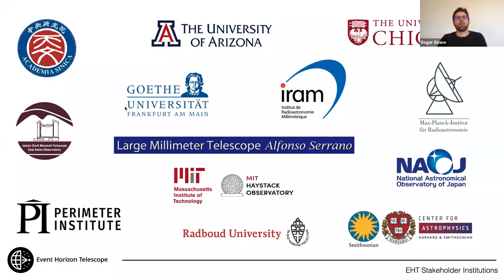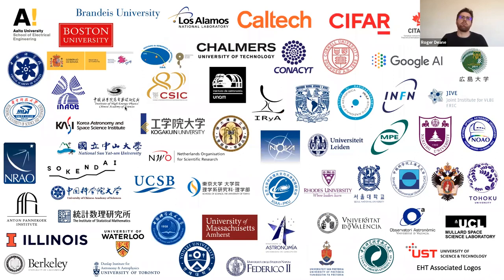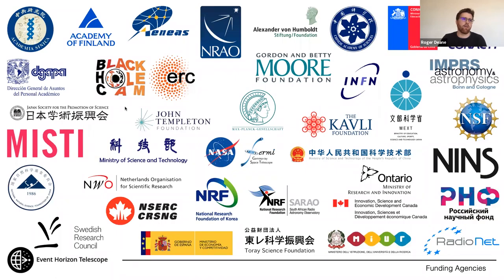The EHT is made up of 13 stakeholder institutes that run the facilities comprising the EHT array. There are affiliated members as well. From a South African perspective, I'm affiliated with the University of Pretoria and a visiting fellow at Rhodes University. Funding comes from a broad range of agencies. South Africa's National Research Foundation, through the South African Radio Astronomy Observatory, contributes through funding for me and my postdoc and travel funds.